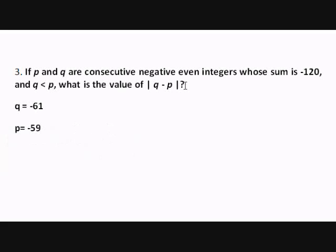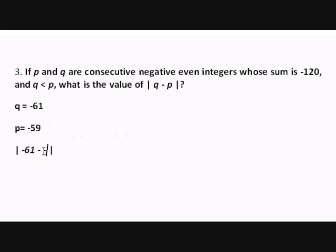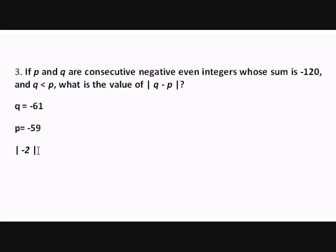So now I finally have my values for Q and for P, and I can go ahead and solve for the reason I started this question in the first place, which is Q minus P. Q gives me negative 61 minus P and I'm negative 59. I just have to be careful with this step so that I remember that minus a negative changes to a positive. So negative 61 plus 59 gives you negative 2. And our last step — when I remove the absolute value signs, remember that it turns my negative 2 into a positive 2. So there we go. I'll see you on the next lesson.